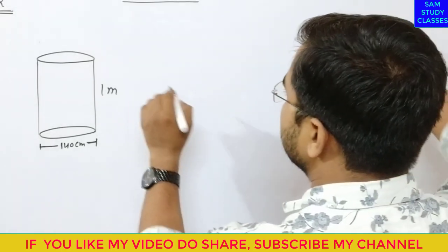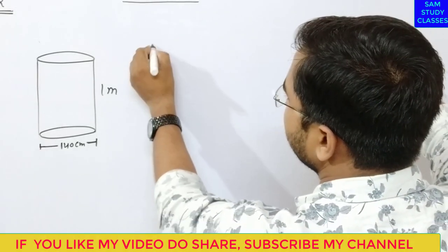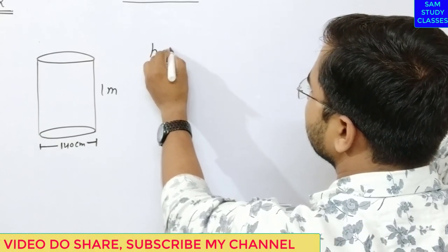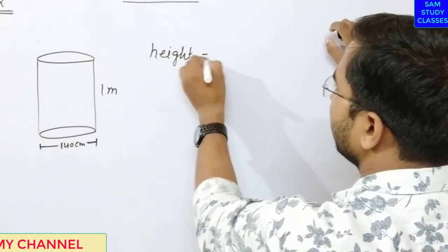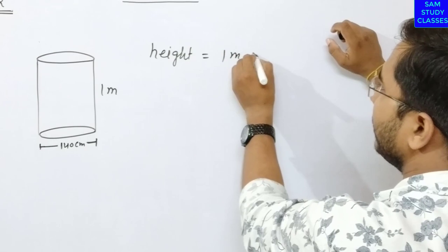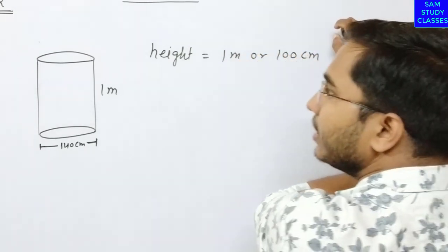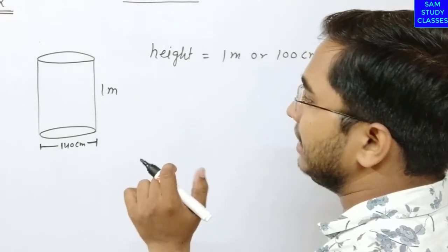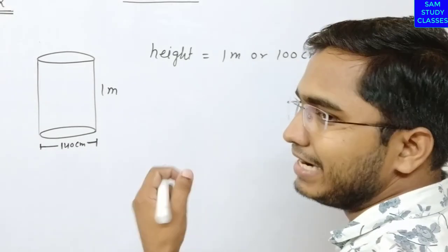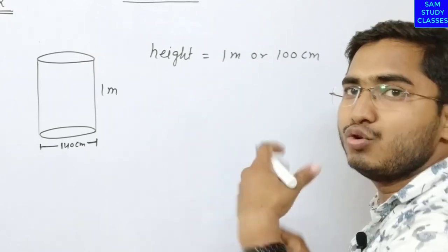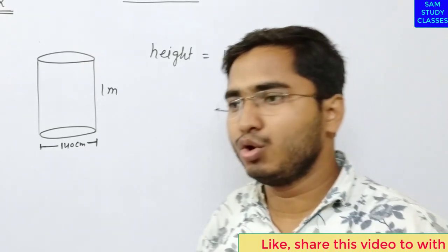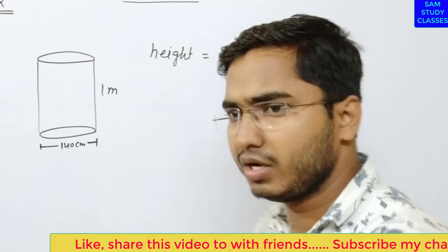So you have to find the area of this closed cylinder. The height given is 1 meter or you can say 100 cm. If you calculate in meters, you have to keep the unit in meters. If you calculate in cm, you have to keep the unit in cm. You have to keep both units the same.